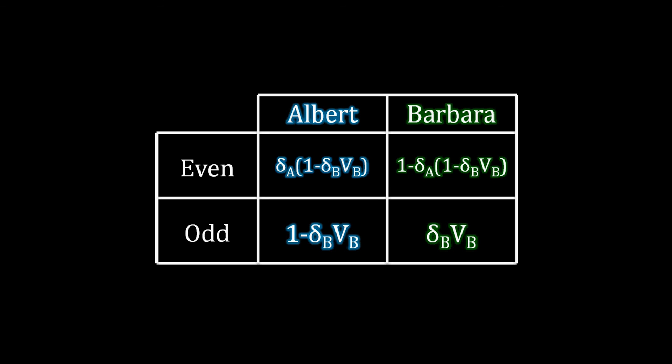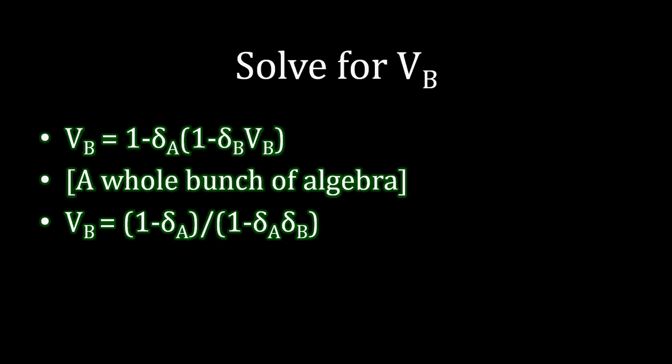We still don't know what VB is, but now we can solve for it, just like we did previously in Rubinstein. We know that in the period before this even period, if Barbara were to reject Albert's offer, she receives the amount in the top-right corner times her discount factor — meaning that amount is in fact her continuation value. Setting VB equal to that value and working through the algebra, we eventually get VB equals one minus delta A, divided by one minus delta A times delta B.